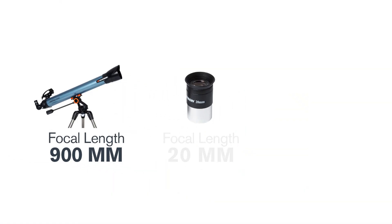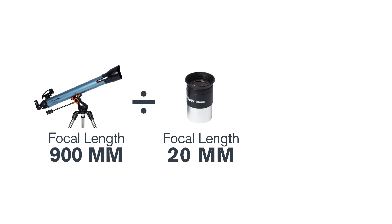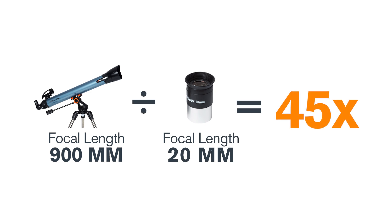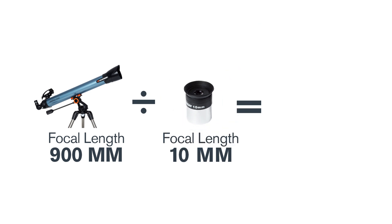Using the 20 millimeter eyepiece, 900 divided by 20 will yield a magnification of 45 times. Using the 10 millimeter eyepiece, 900 divided by 10 will yield a magnification of 90 times.